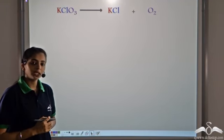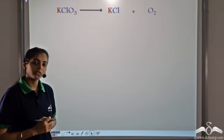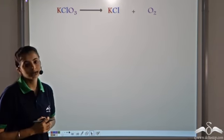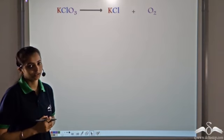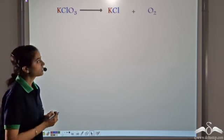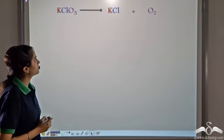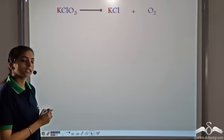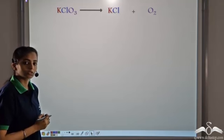We have already balanced some chemical equations. Let's try to balance some more. We are given an equation KClO₃ → KCl + O₂.